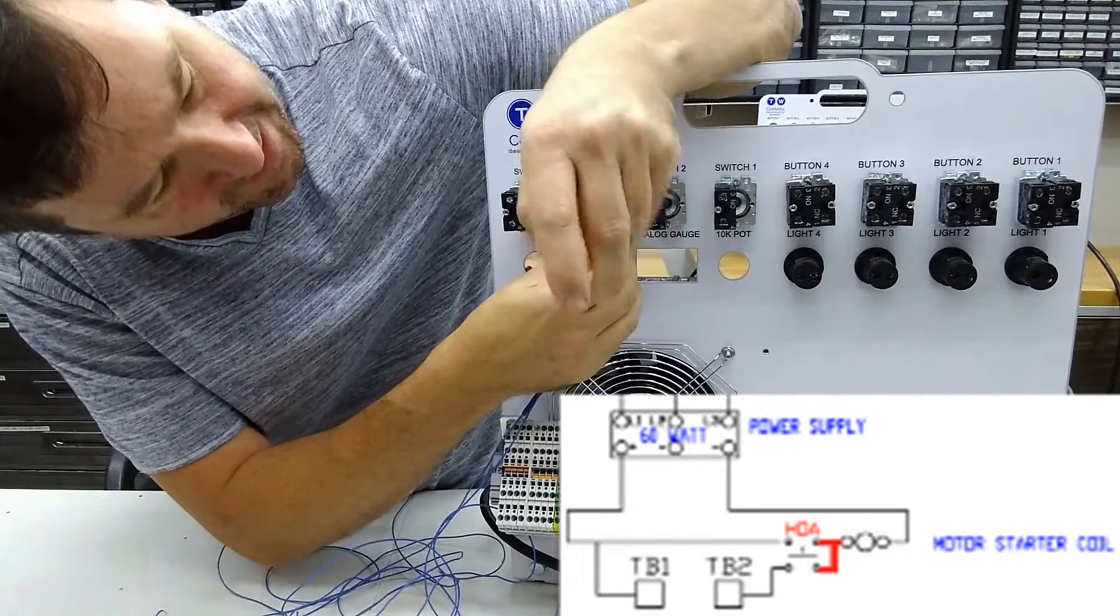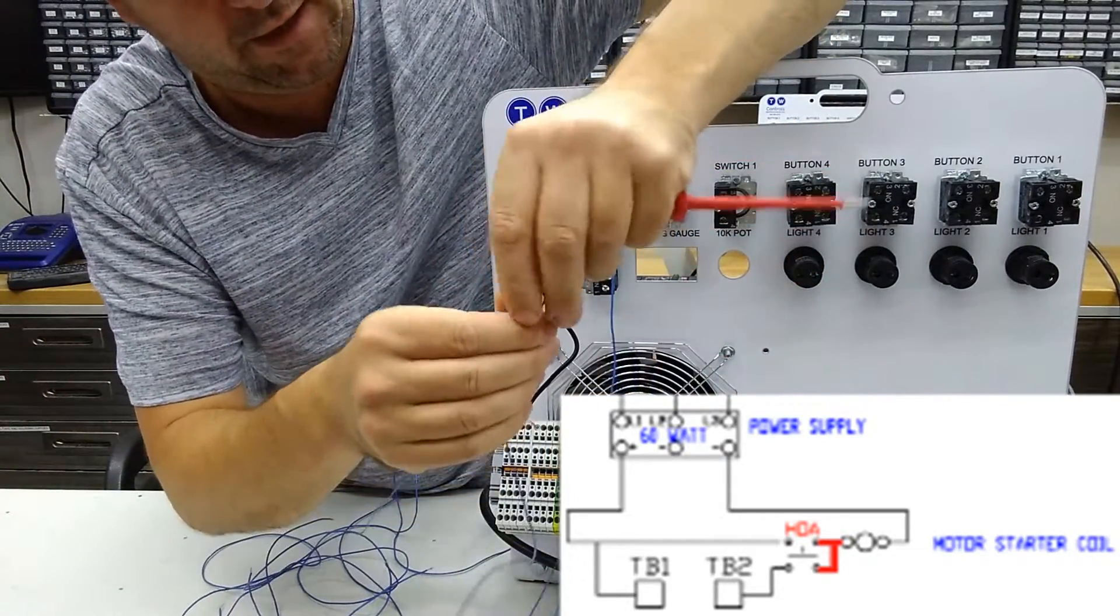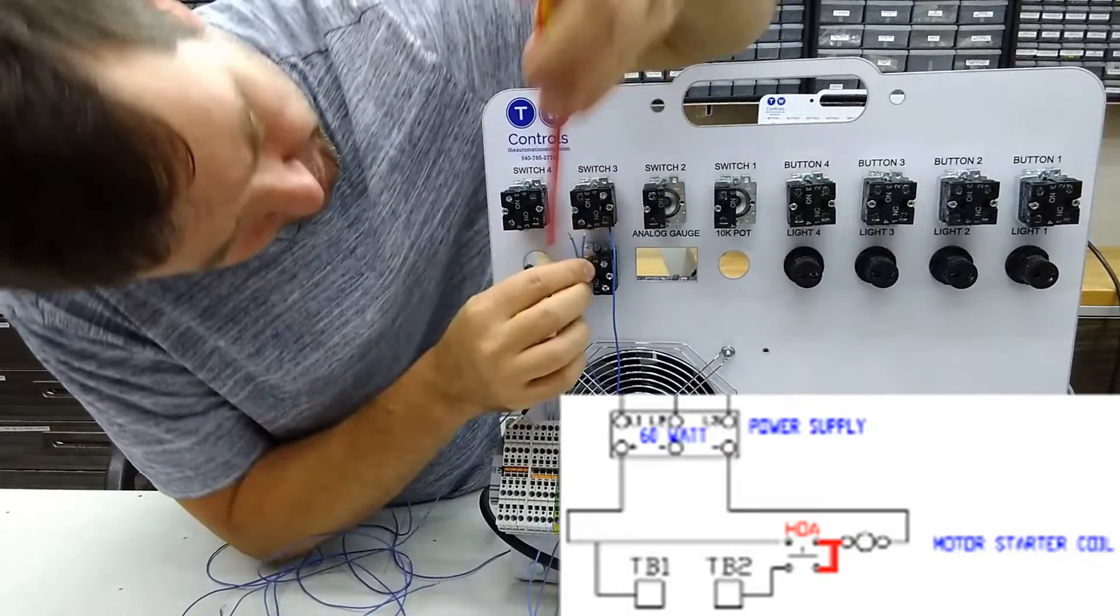So we'll connect a wire there. And then along with the second wire, we'll put another piece of wire on.